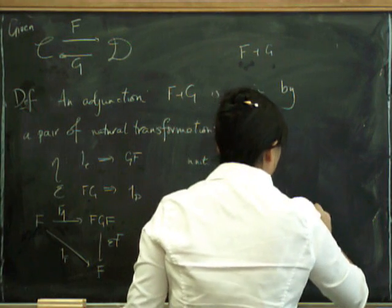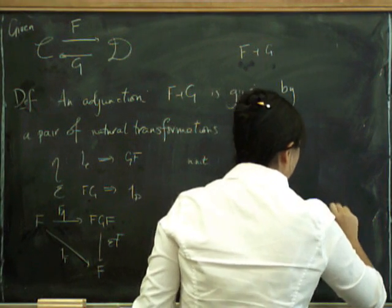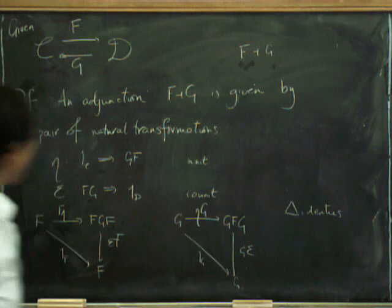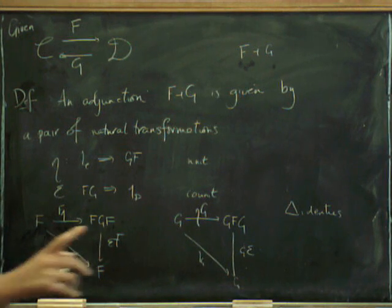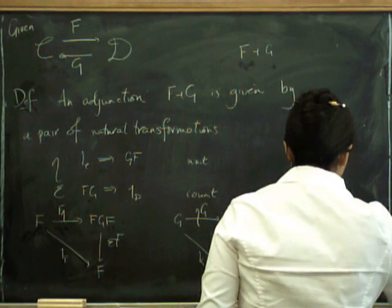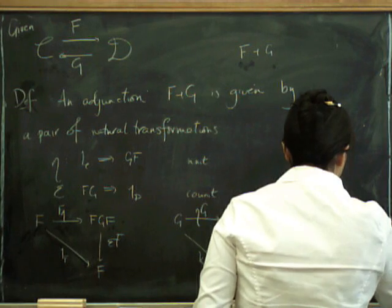These are often called the triangle identities because, well, they're triangles. And that is the definition of adjunction.